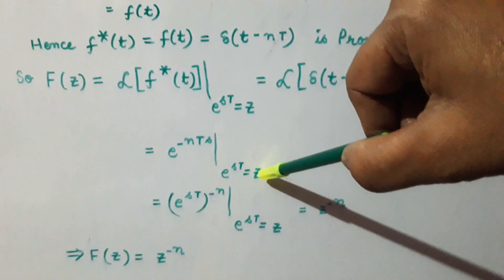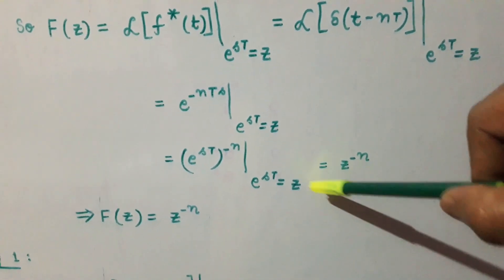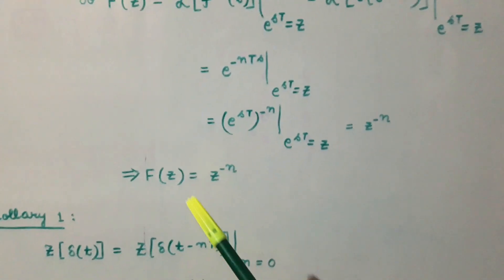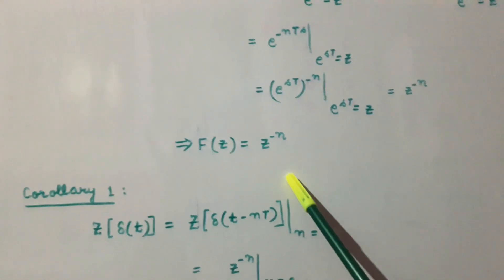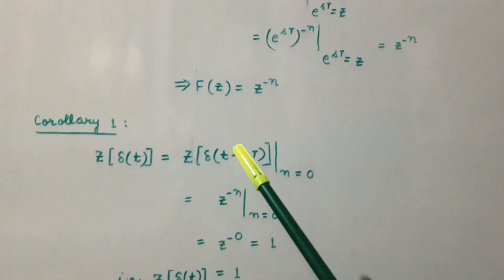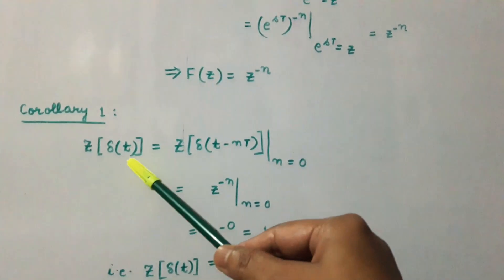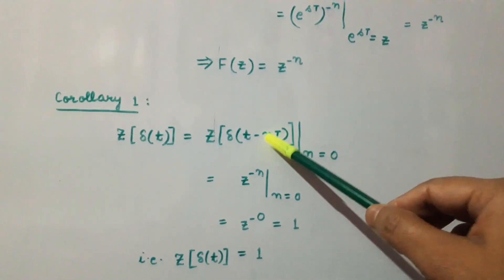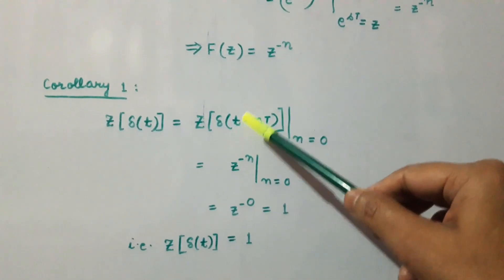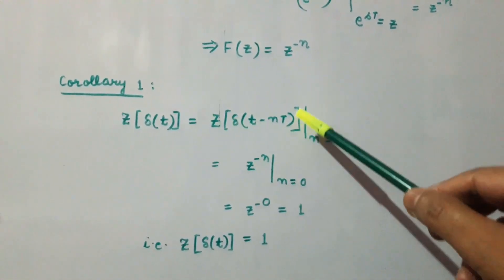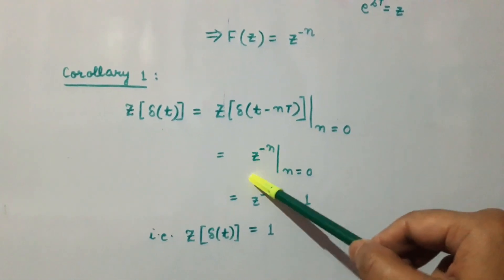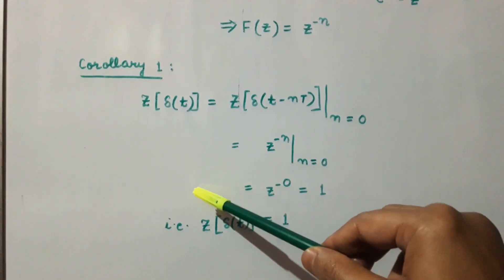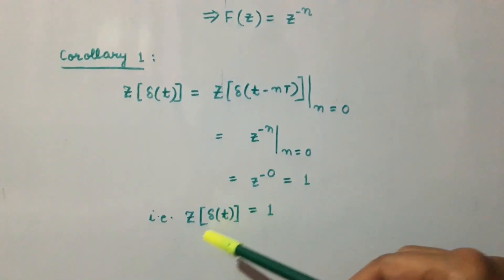So the Laplace transform of delta(t - nT) is equal to e^(-nTs) when e^(sT) = z. On solving this, the Z transform of the function equals z^(-n). That is, the Z transform of the shifted unit impulse is z^(-n). From this we derive that the Z transform of the impulse function delta(t) equals the Z transform of delta(t - nT) when n = 0, which gives z^(-0) = 1.